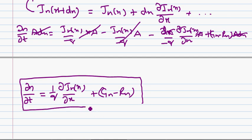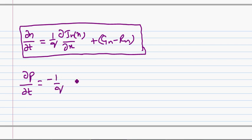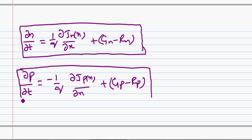Similarly, we can write the continuity equation for holes. The only difference is that the charge of a hole is positive while the charge of an electron is negative, so instead of −q we use +q. The continuity equation for holes is: ∂p/∂t = −(1/q)·∂jp(x)/∂x + gp − rp.